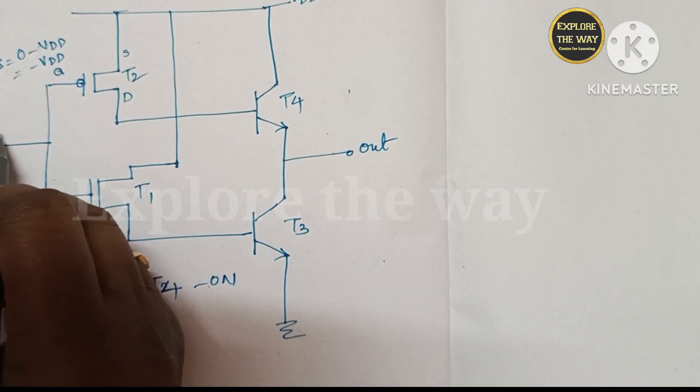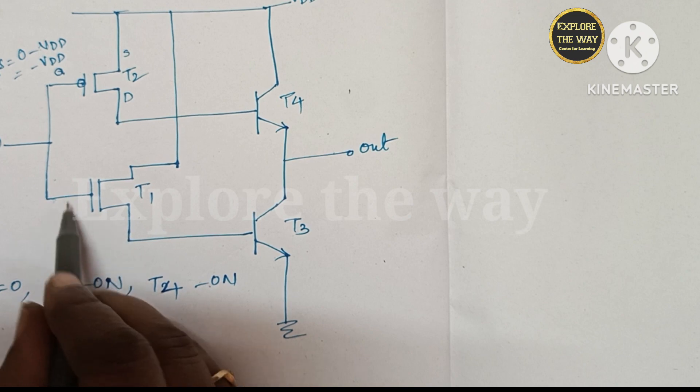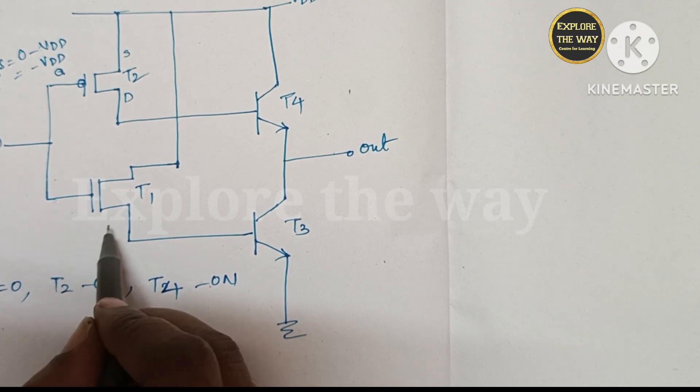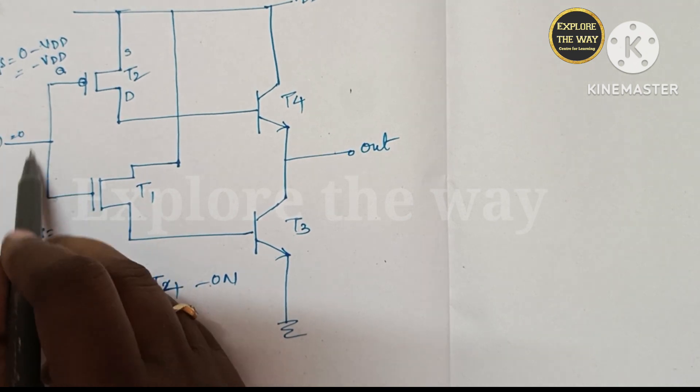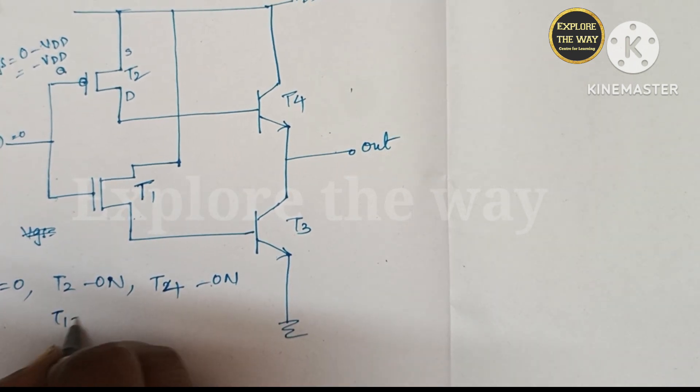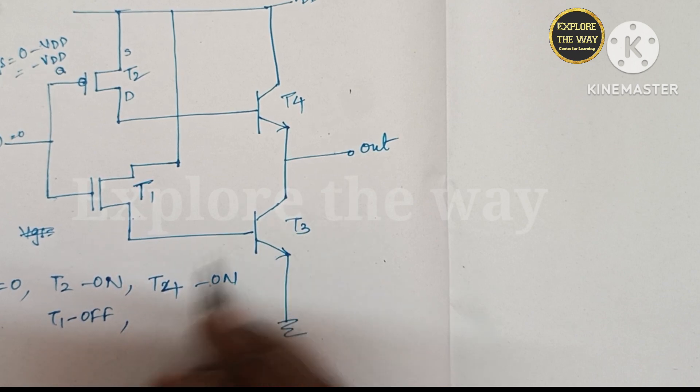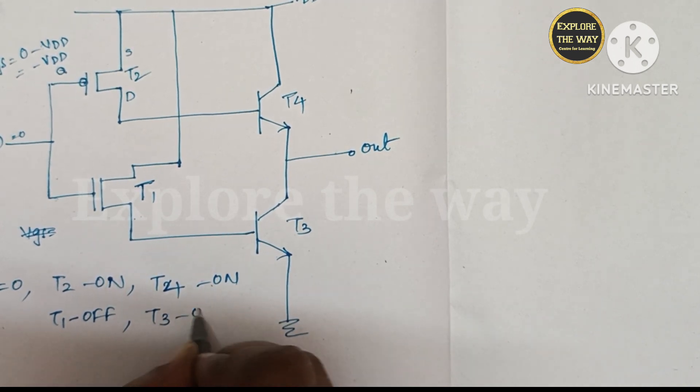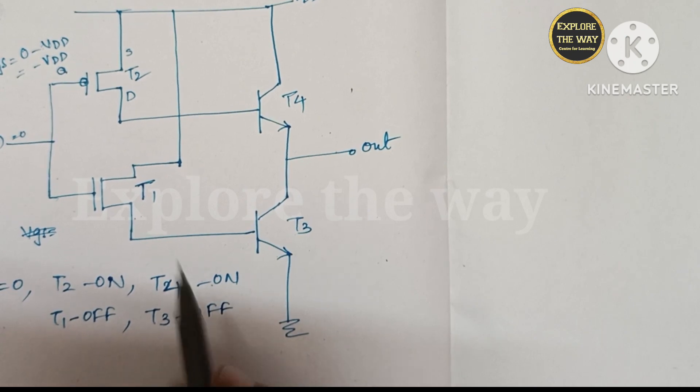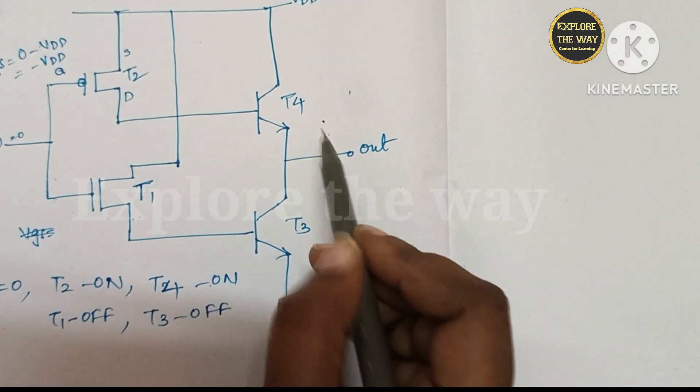And when the input is 0, the VGS for this NMOS transistor T1 is 0. So here the transistor T1 will turn off. So here no way to turn on this transistor T3. So T3 also turn off. So here T1, T3 turn off. T2, T4 will turn on.